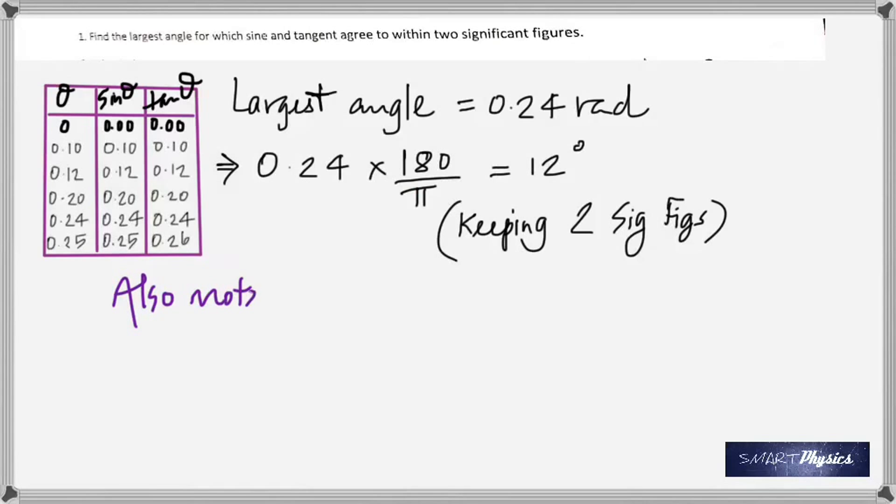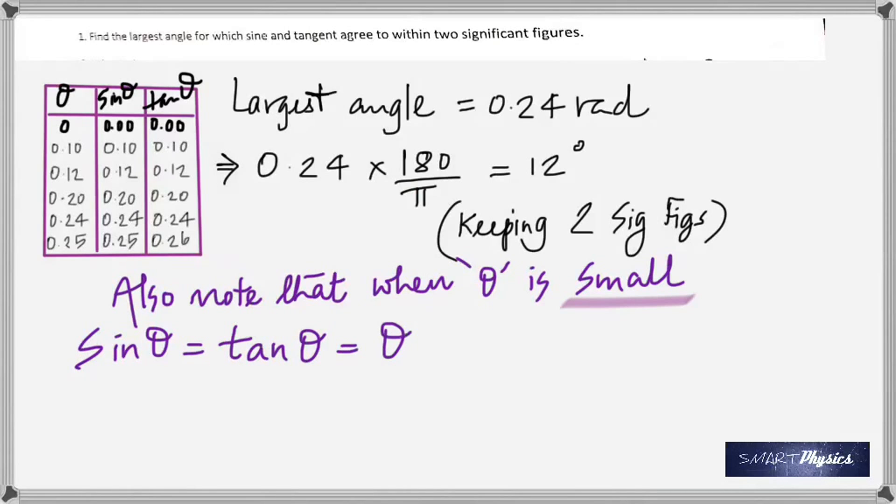And you also note that theta and sine theta are the same when theta is small. We'll be using that so many times in physics, whenever the angle is small and the angle is in radians, sine theta is exactly equal to theta.